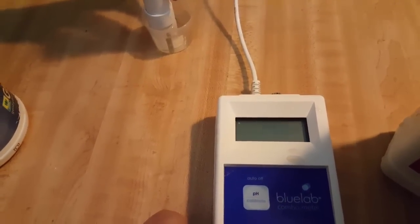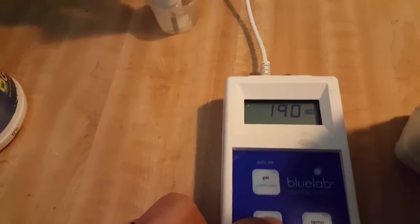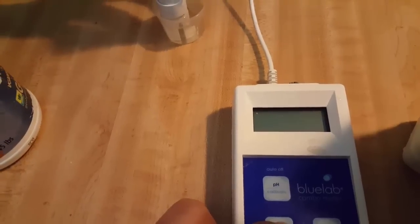Pumpkin spice. So you've got EC, you've got CF, you've got total dissolved solids. This is a PPM. We have another kind of PPM, which is a 700, and that's just a different measuring. It's a different way that it converts it.